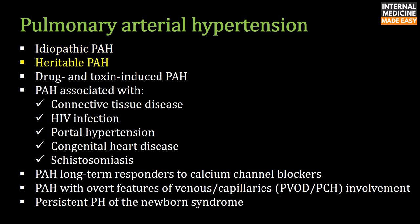Hereditary pulmonary arterial hypertension is an autosomal dominant disease characterized by reduced penetrance, variable expressivity, and female predominance. Most cases are caused by a mutation in a gene called bone morphogenetic protein receptor type 2.